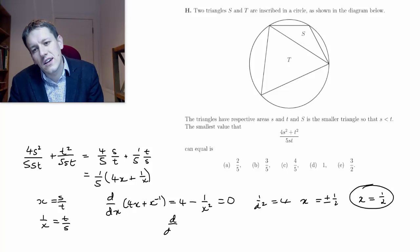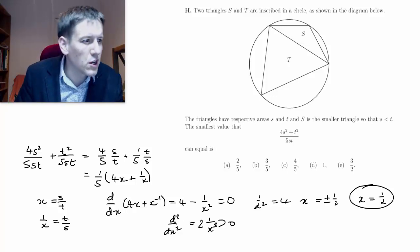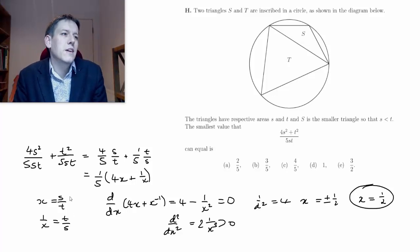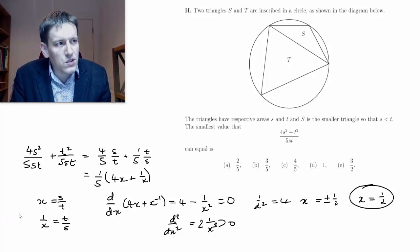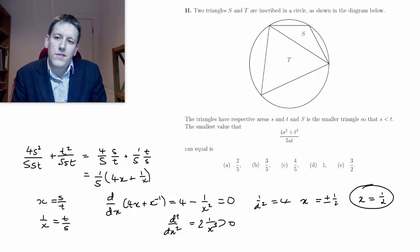The second derivative here is, so I've got minus x to the minus 2, so that's going to be plus 2x to the minus 3, so 2 times 1 over x cubed. For the positive value of x, that is positive. So this would give us a minimum as we hoped. You might also just think about what this graph looks like quickly. So this is a minimum for the function that we're looking at.